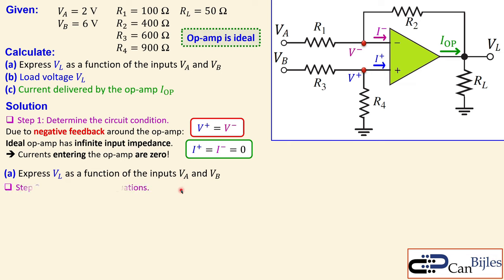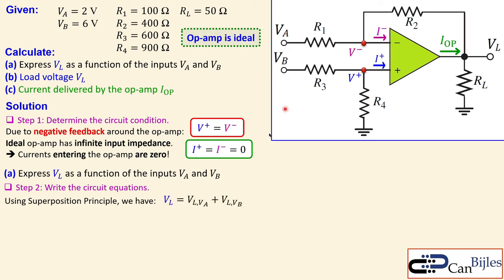To express the load voltage as a function of Va and Vb, we can use the superposition principle since we have two voltage sources. We activate one source at a time and disable the other — a disabled voltage source is shorted to ground. So VL equals VL due to only Va, plus VL due to only Vb. This is equation number one. This superposition principle has been discussed in detail in the DC electric circuit playlist.